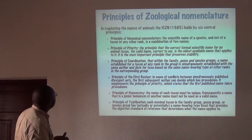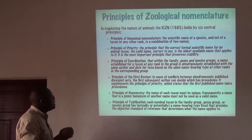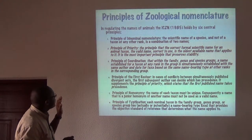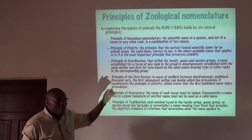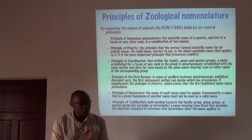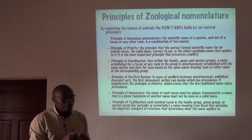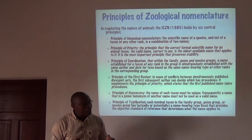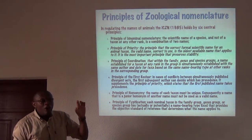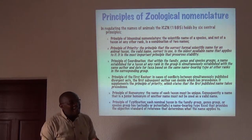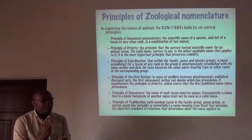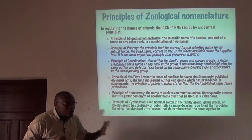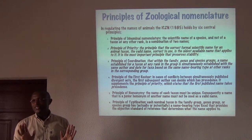The third principle is the principle of coordination, which states that within a family, genus, or species group, a name established for a taxon at any rank is simultaneously established with the same author and date. In practice, if a researcher finds a new species and places it in a new genus, they are automatically the authority of both the genus and the first species. If they also establish a new family, they are the author of the family, the type genus, and the type species.